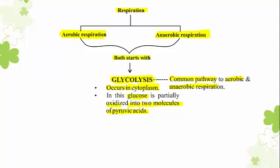The site of glycolysis is the cytoplasm. Glycolysis is the end of the glucose molecule — pyruvic acid molecules are produced. This is the first step and a common step for both aerobic respiration and anaerobic respiration.